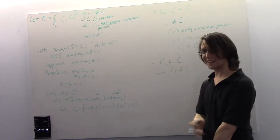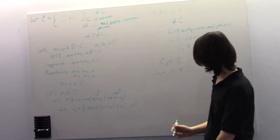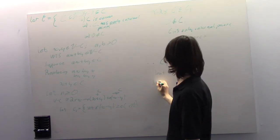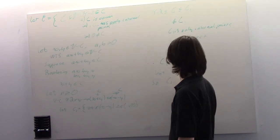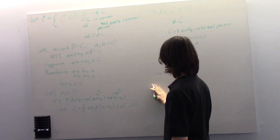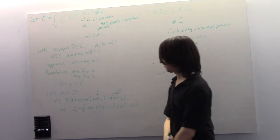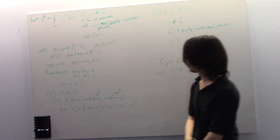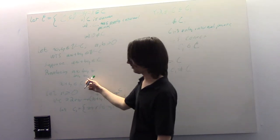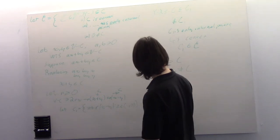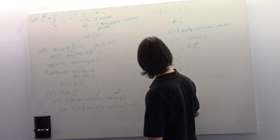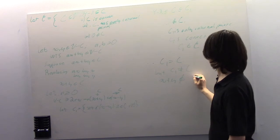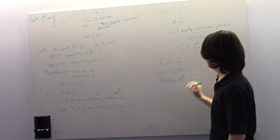That's a contradiction. So we made some mistake here. Our mistake was the assumption that ax plus by is an element of C. Therefore x plus y is not an element of C.